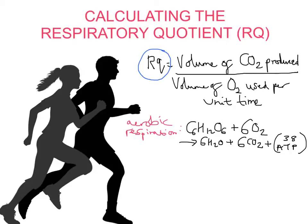So when we look at this respiratory quotient, we're looking at the volume of CO2 produced and volume of O2 used per unit time. Now we can see that 6 carbon dioxide molecules are produced and 6 oxygen molecules are consumed.